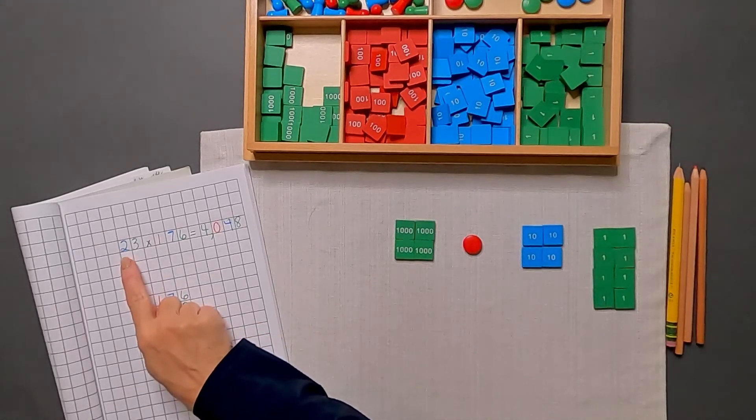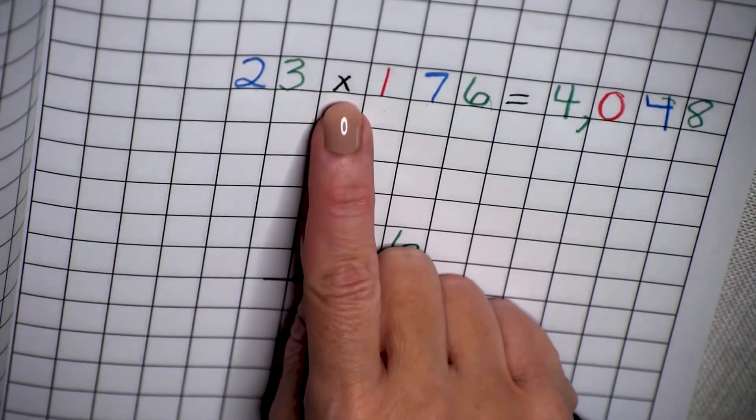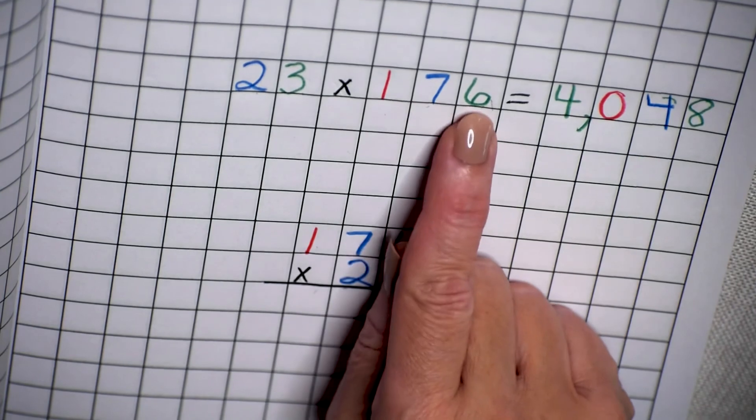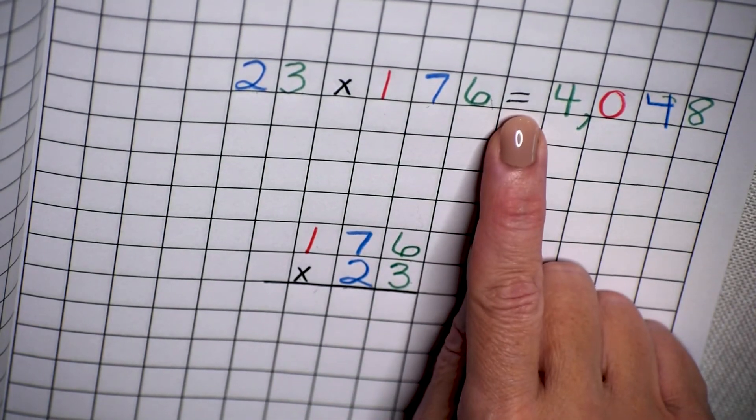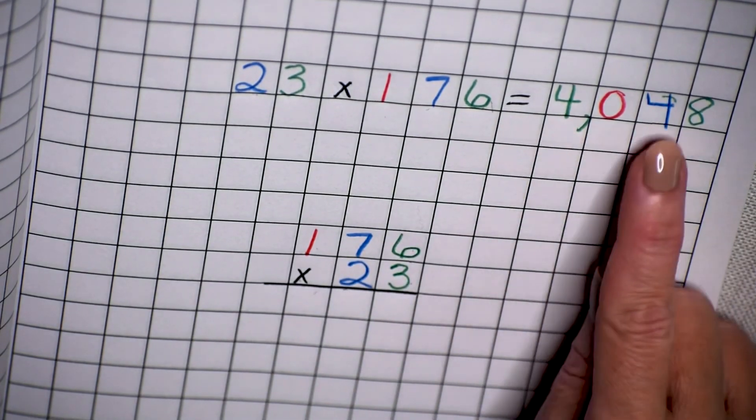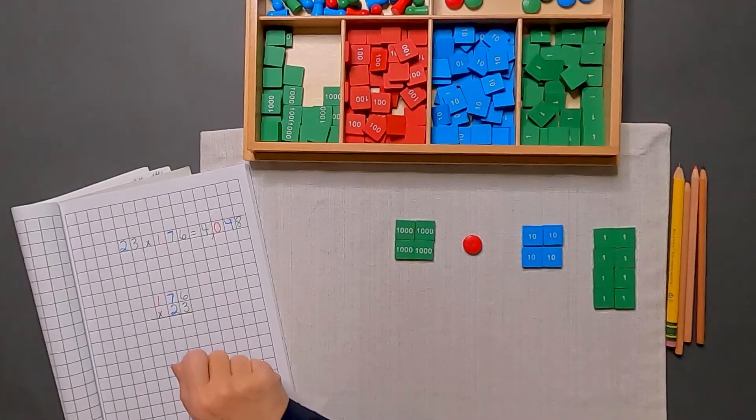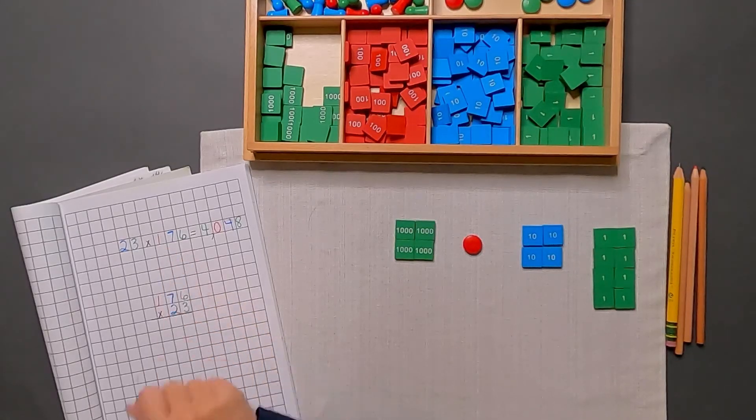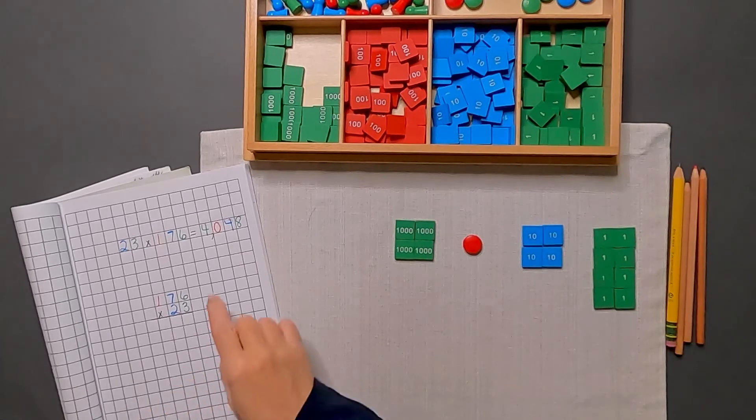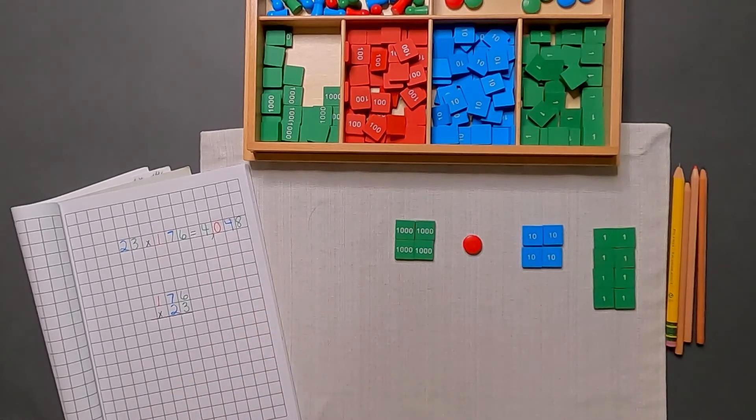So, 23 times 176 equals 4048, or 176 taken 23 times is equal to 4048. That's it for this multiplication lesson with the stamp game.